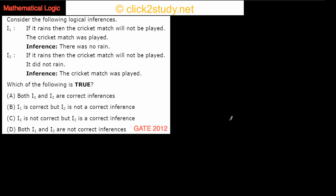Consider the following logical inferences. We have two inferences: I1 states that if it rains, the cricket match will not be played. The cricket match was played, and the inference is there was no rain. I2 states the same premise — if it rains, the cricket match will not be played — but this time it did not rain, and the inference is the cricket match was not played. Which of the following is true?